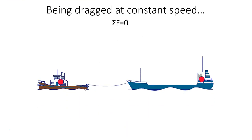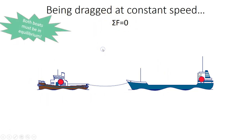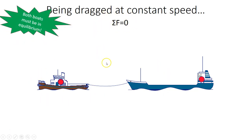Let's simplify the situation slightly. We've got two diagrams. Let's imagine the boats, first of all, are being dragged at a constant speed. So the sum of the forces in the whole system is zero, and both of the boats must be in equilibrium. That means the forces on either one of the two boats or the whole system must be balanced.